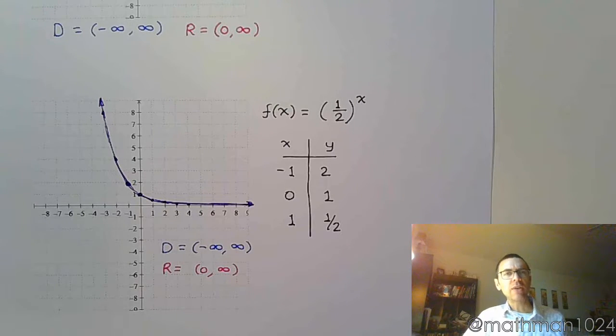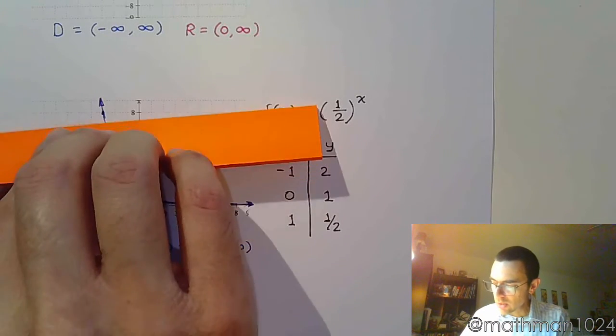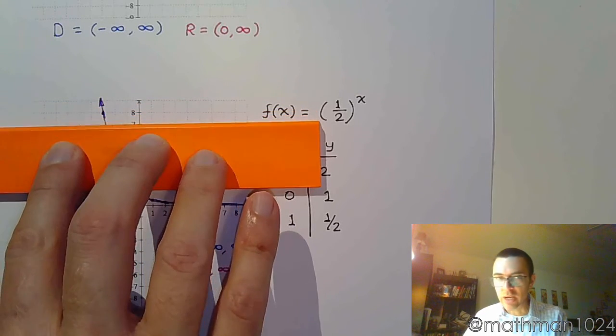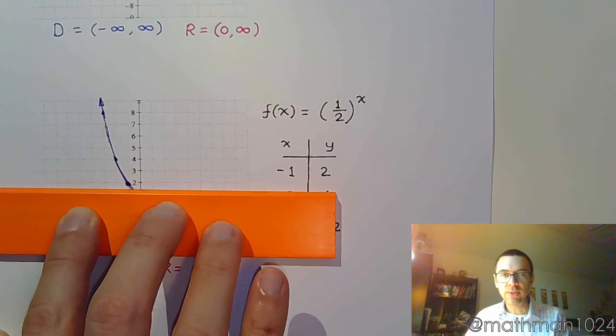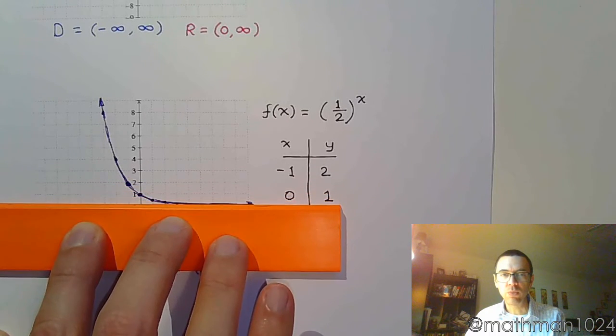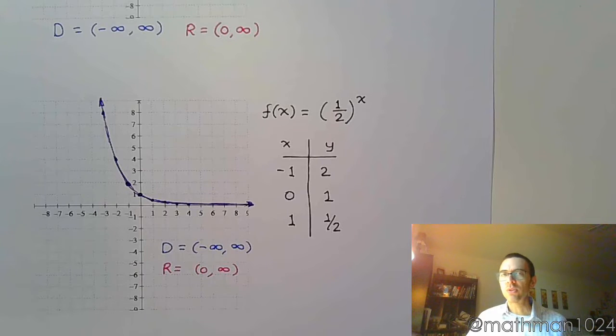And just to kind of drive home the point that this is a one-to-one function and it's going to have an inverse, let's do that horizontal line test. So as I drag a horizontal line through this, you see that I'm only ever hitting it in one spot. And then it gets flatter and flatter, but I'm still only hitting it in one spot. So he passes the horizontal line test. He's going to have an inverse.